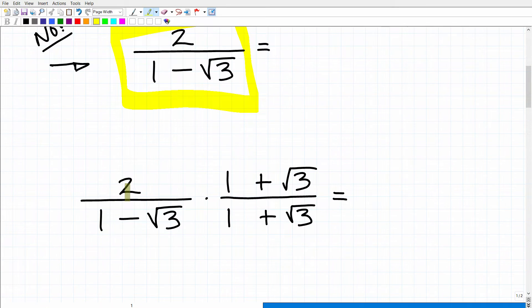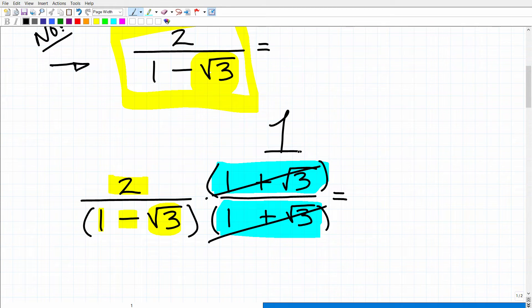Okay, so, here is our problem. We have 2 over 1 minus the square root of 3. Well, we can't leave this in this particular form. Again, we have an irrational number in the denominator. So, what we need to do is to multiply both the numerator and denominator by something called the conjugate. So, the conjugate of 1 minus the square root of 3 is 1 plus the square root of 3. So, I need to multiply this denominator here by the conjugate being 1 plus the square root of 3. But if I multiply the denominator by the conjugate, I also have to multiply the numerator by the conjugate. If you look here, 1 plus the square root of 3 over 1 plus the square root of 3, this is just something divided by itself. This is nothing more than a fancy 1. So, we're just taking this expression and multiplying it by 1.